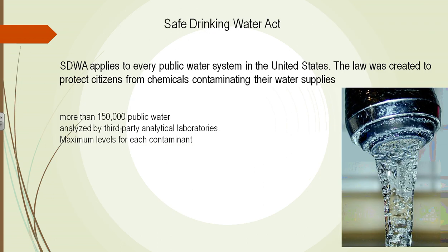The EPA looked at the Safe Drinking Water Act. There are more than 150,000 public water companies in the United States. The EPA decided each of them needed to be tested by a third-party analytical lab. Maximum contaminant levels were developed — for copper, lead, pesticides, and more. All of these had to be controlled and treated before water could be passed on to cities.